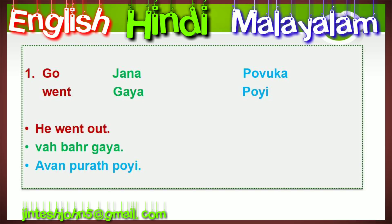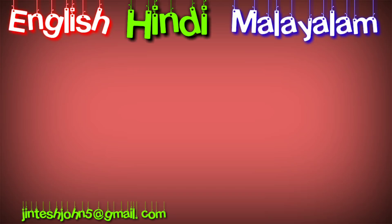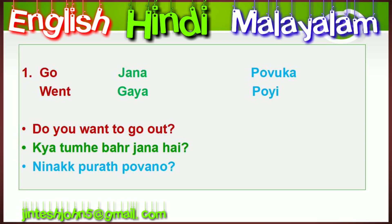Now we see an example with the second form 'went' (gaya / poi). Example: 'He went out.' In Hindi: bahar gaya. In Malayalam: avan purath poi. Another example using 'go': 'Do you want to go out?'